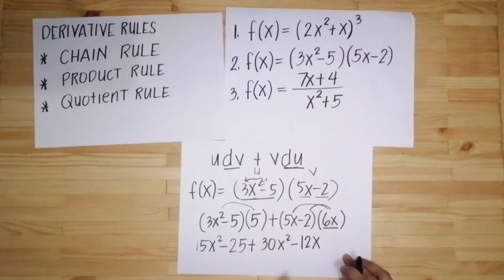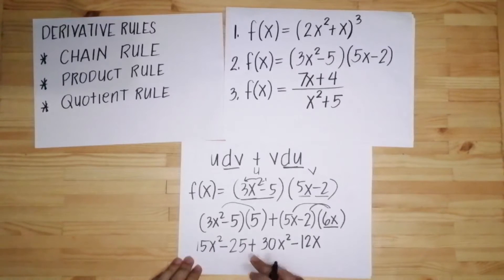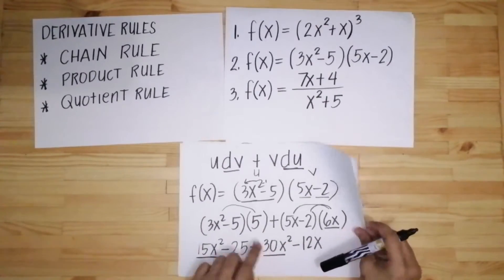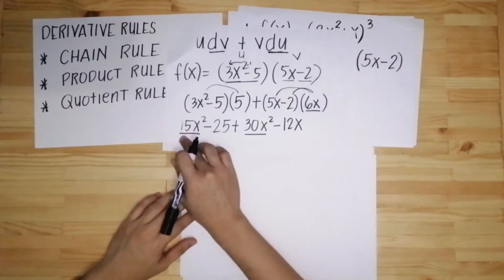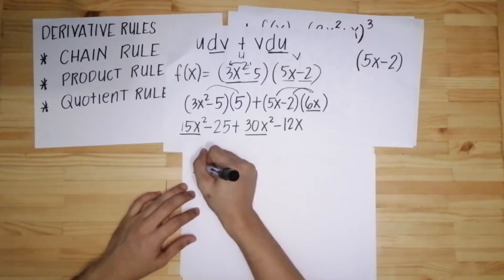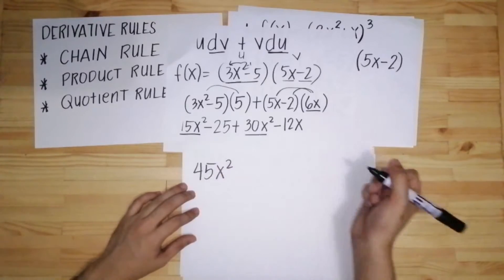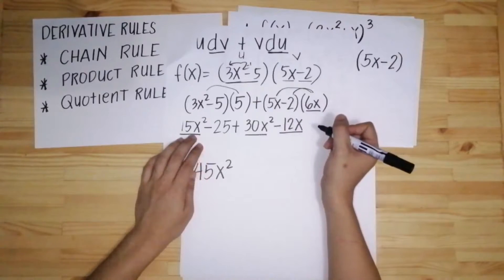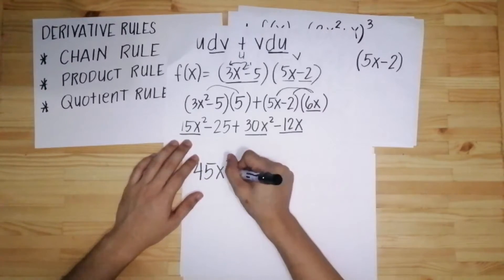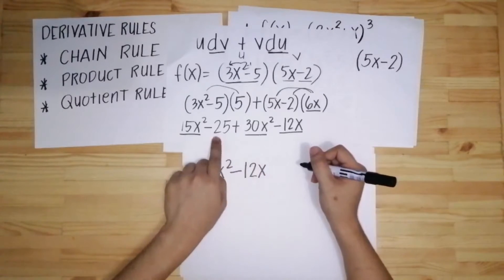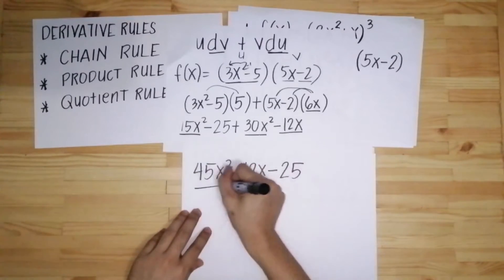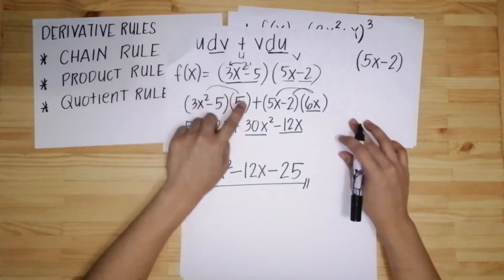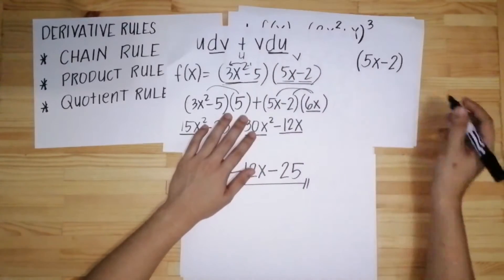So ngayon, bago mo i-finalize yung answer mo, kailangan i-combine mo muna lahat na magkakaparehas na term. 15x squared ay kaparehas ni 30x squared. So 15 plus 30, that is equal to 45x squared. Next, negative 25 walang kaparehas, negative 12x walang kaparehas pero unahin yung may x. Negative 12x then minus 25. This will be your final answer. That's how you do the product rule.